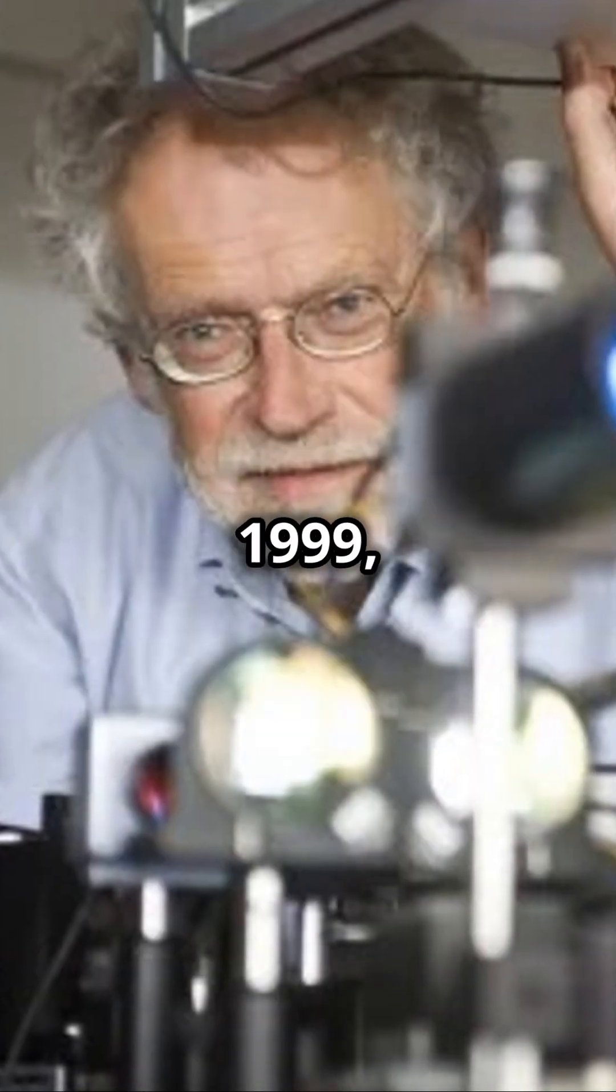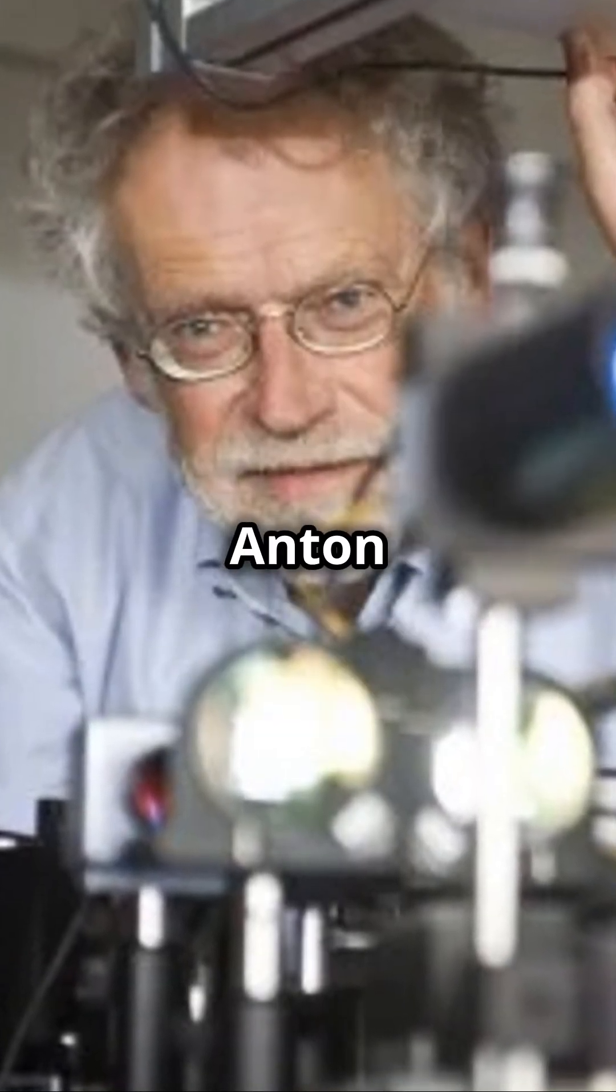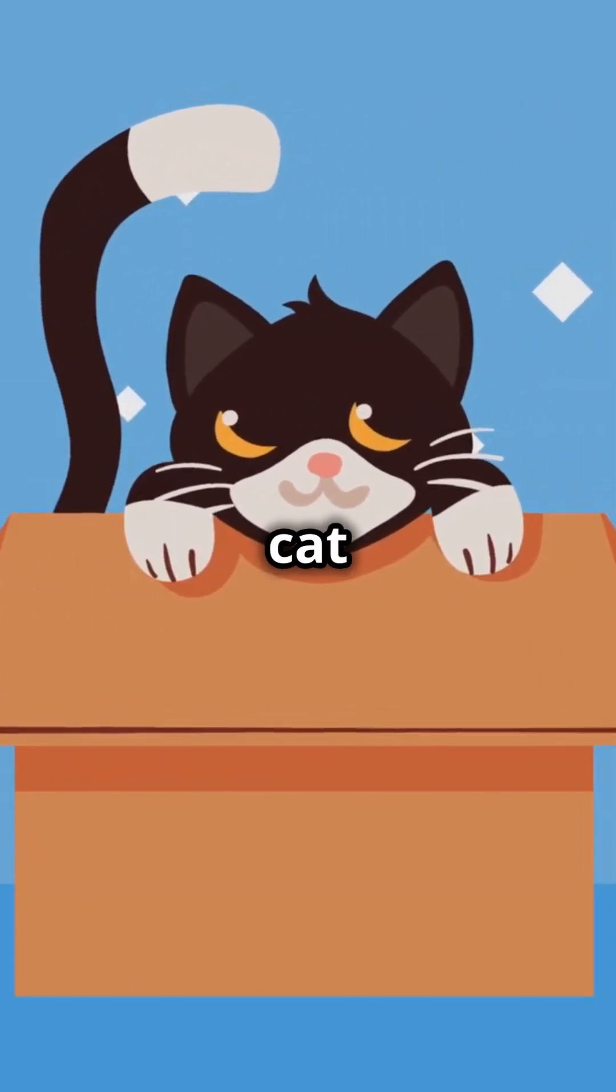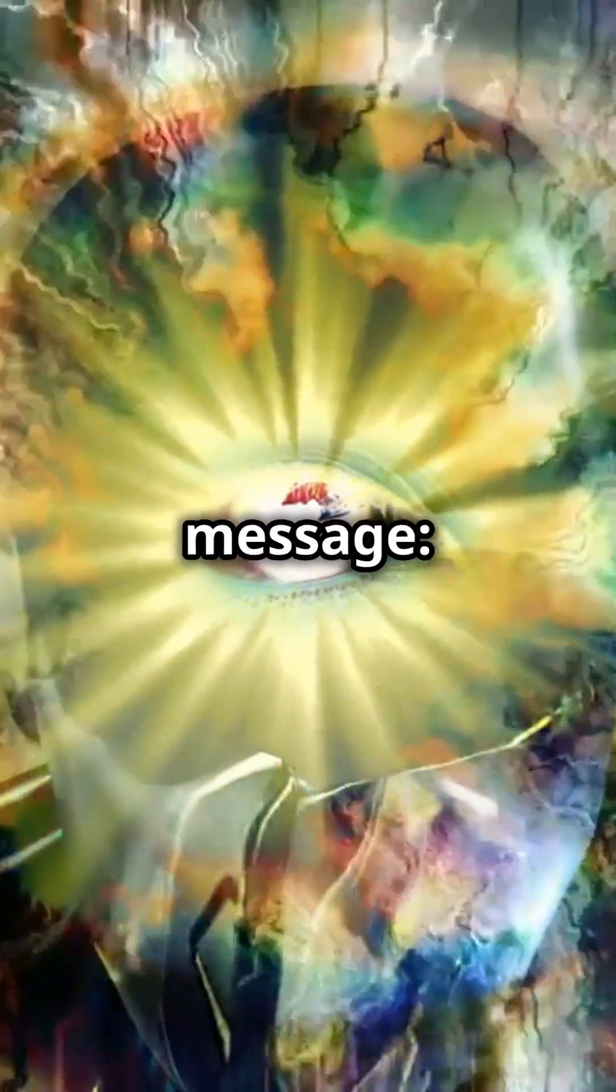Did you know? In 1999, Austrian physicist Anton Zeilinger and his team conducted an experiment that quietly made history. It wasn't as famous as Schrodinger's cat or the double-slit experiment with electrons, but it delivered a groundbreaking message.